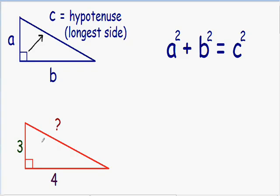I'm going to go to my 90-degree angle and draw an arrow to the opposite side. This side, which is opposite our 90-degree angle, is always going to be our longer side — it's always going to be our hypotenuse. And our hypotenuse has to be our side c. So the side that we're trying to find, the one we don't know yet, is equal to c.